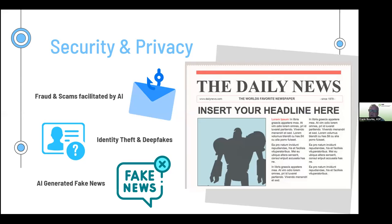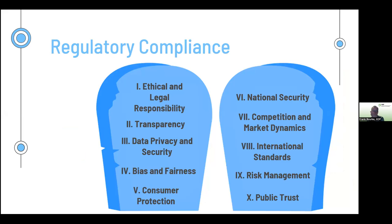AI can be used to generate realistic-looking news articles, blog posts, or social media content. Advanced NLP models like GPT-3 can generate coherent and contextually relevant text that might resemble legitimate news. Fake news generated by AI can spread misinformation, manipulate public opinion, and influence political discourse — quite sobering.